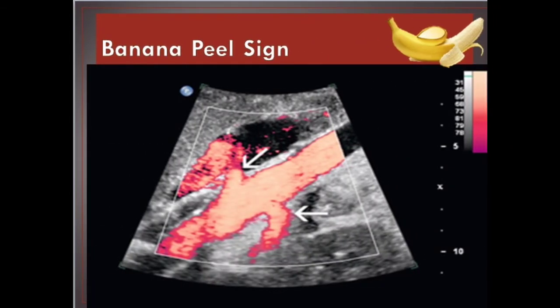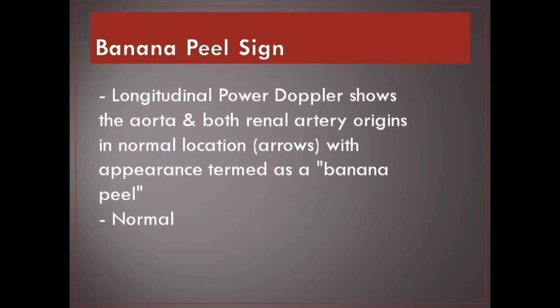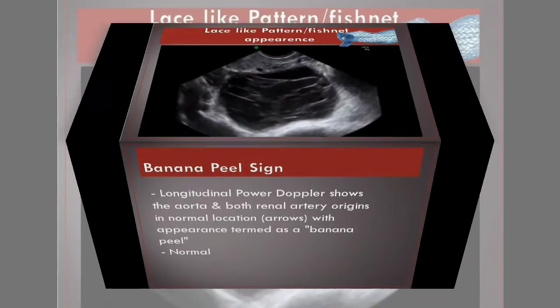Banana peel sign. Longitudinal power Doppler shows the aorta and both renal artery origins in normal location, with the appearance termed as a banana peel. Normal.